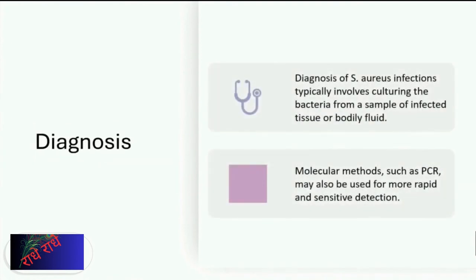S. aureus is a bacteria that can cause a variety of infections. Diagnosis typically involves culturing the bacteria from an infected tissue or bodily fluid sample, though molecular methods such as PCR may be used for a more rapid and sensitive detection.